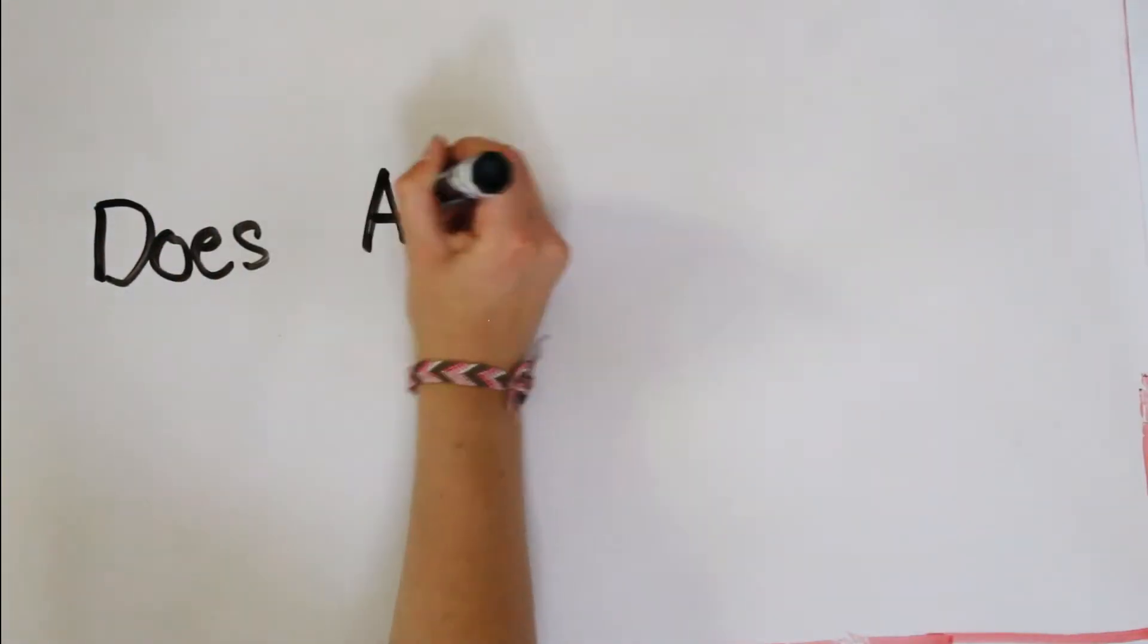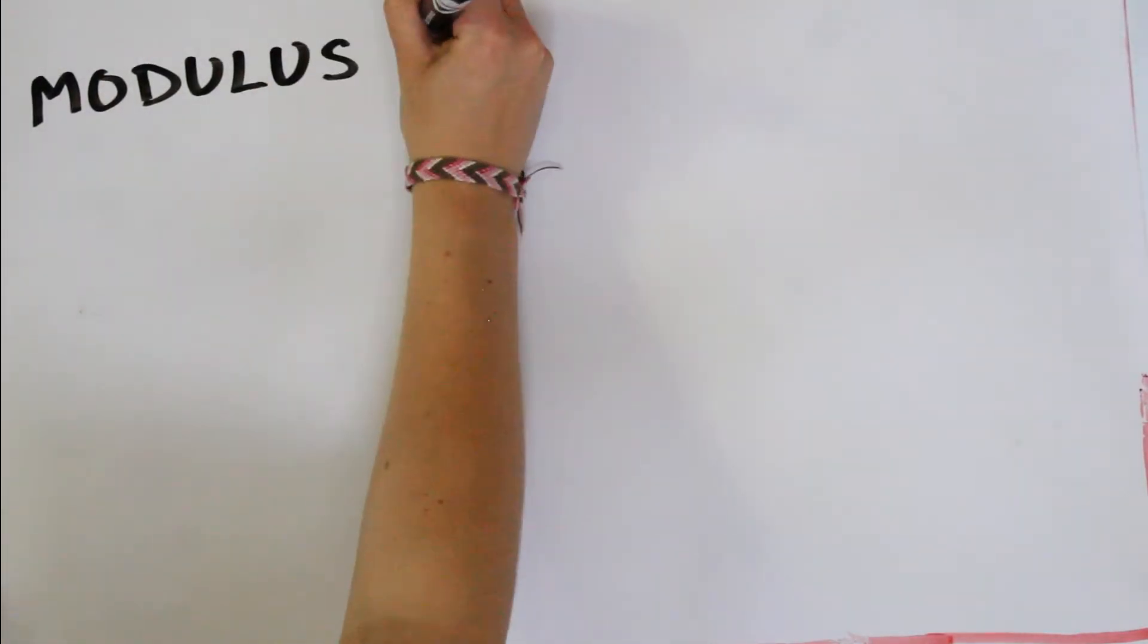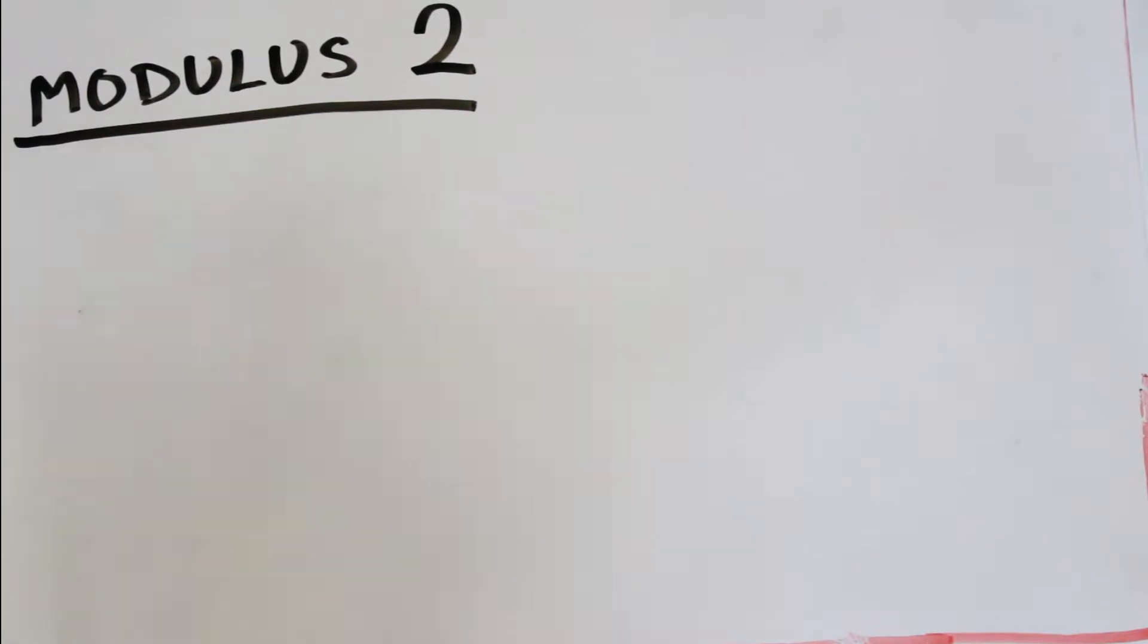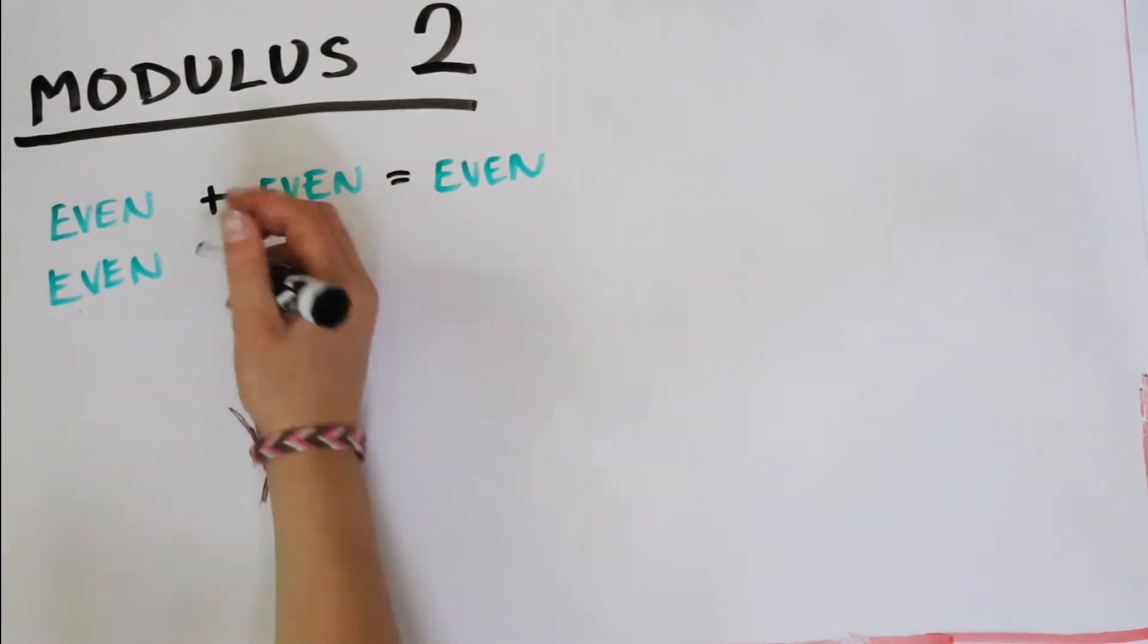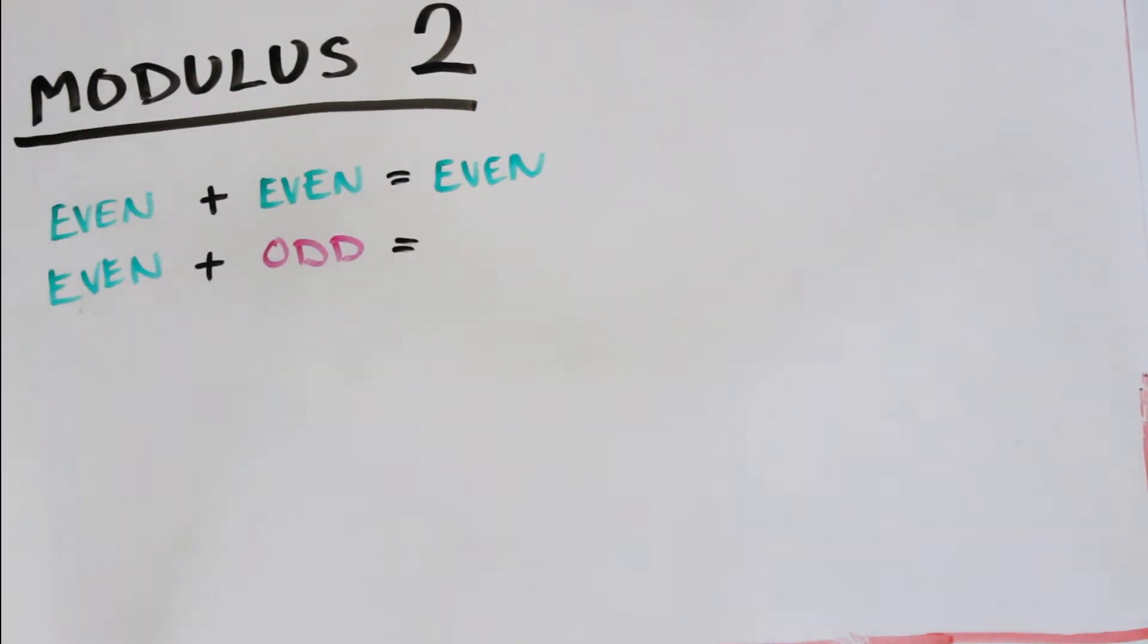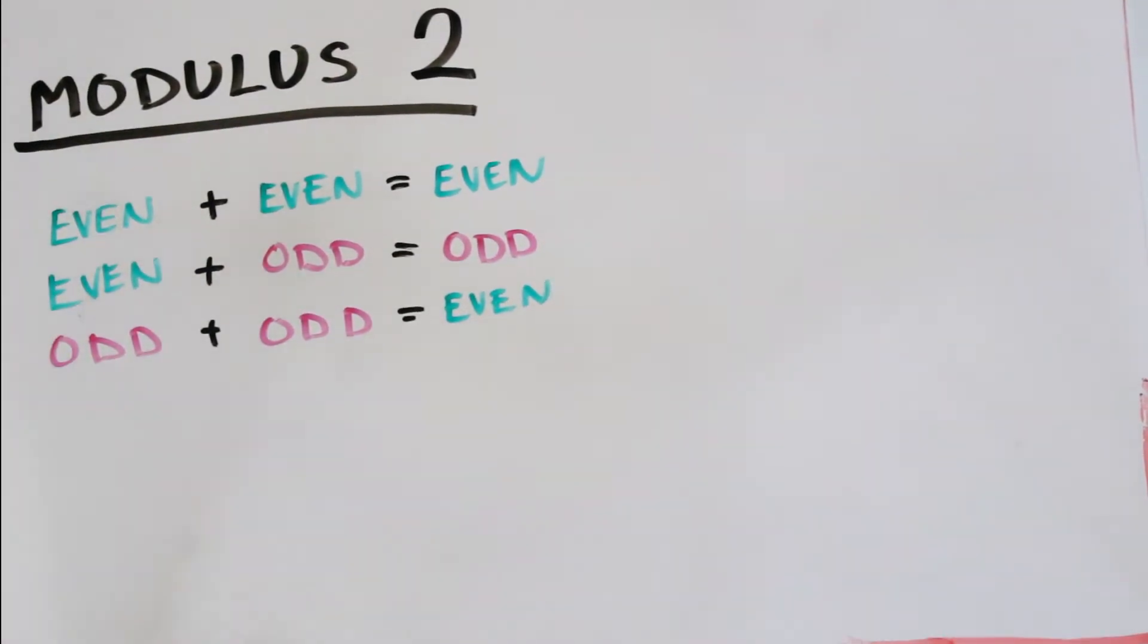So a question that we might want to ask next is: does algebra work? Does our basic laws of algebra work in the modulus world? To answer this question, I want to look at modulus 2 because that's what most people are most comfortable with. I'm sure that you've been told since you were little that an even plus an even is an even, even plus odd is odd, odd plus odd is even.